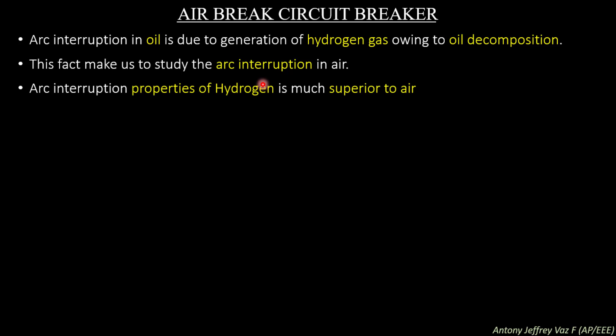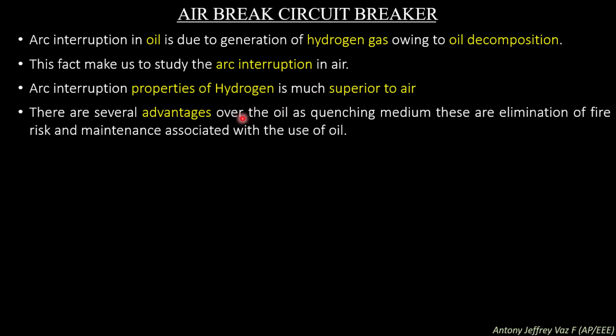Arc interruption properties of hydrogen are much superior to air. Since hydrogen is a dielectric material, hydrogen gas can be used instead of air to quench the arc because the dielectric properties of hydrogen gas are very high. There are several advantages over oil as a quenching medium. One advantage is the elimination of fire risk and maintenance associated with the use of oil. If hydrogen gas is used, we only need to purchase air so that we can use the hydrogen present in the air to extinguish the arc.